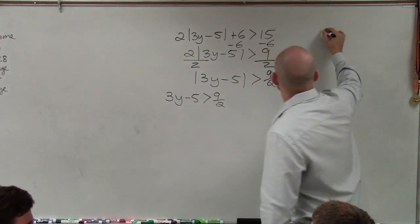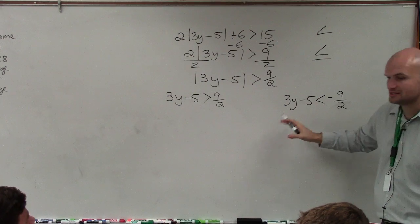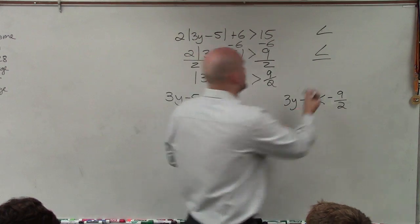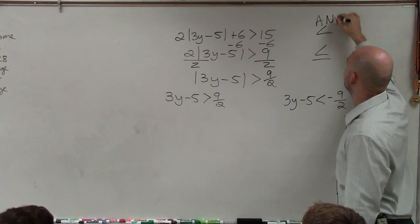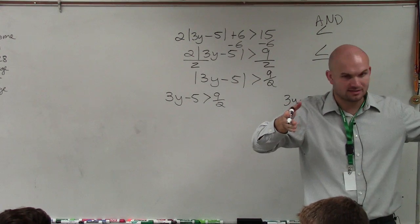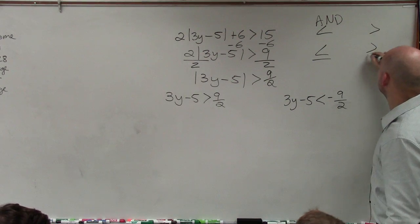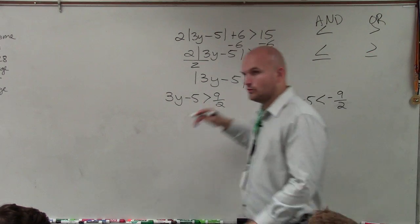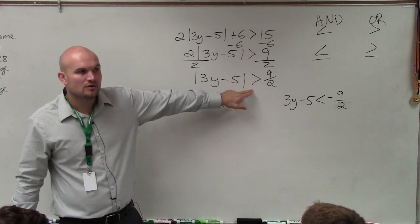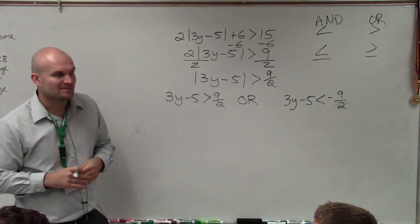There's another thing that I want you guys to write down in your notes. When we take an absolute value and create our two cases, we don't just create two inequalities that we have to solve. We now create a compound inequality. So if my original sign was less than, I would create a compound inequality that was in the form AND. Remember, compound inequalities that are in the form AND, we only graph where they intersect. You guys kind of remember? Graph their intersection. Where if it's greater than or greater than or equal to, you create an OR compound inequality, where usually, the inequalities are going to be going in opposite directions.